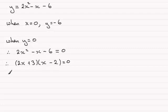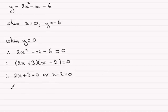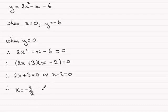So we can now put each of these factors equal to 0. Either 2x plus 3 equals 0, or x minus 2 equals 0. With the first factor, 2x equals minus 3, divide both sides by 2, and x equals minus 3 over 2, or minus 1 and a half. And for the second factor, adding 2 to both sides gives x equals 2.